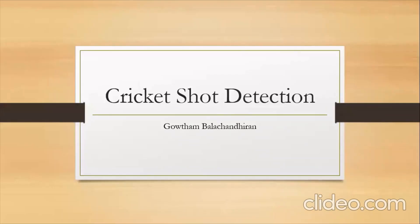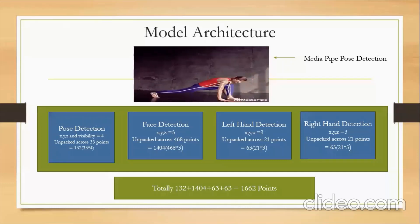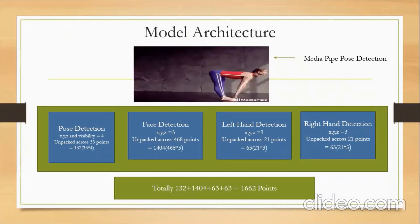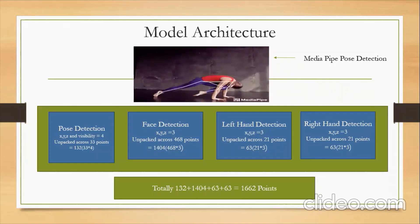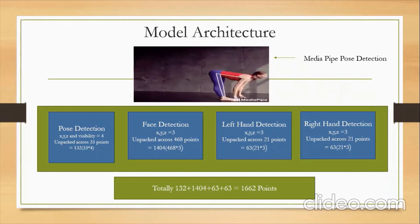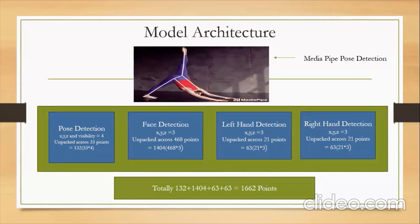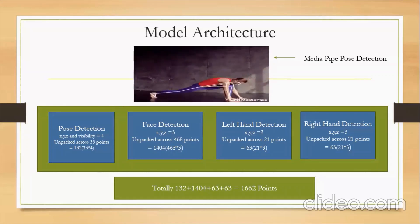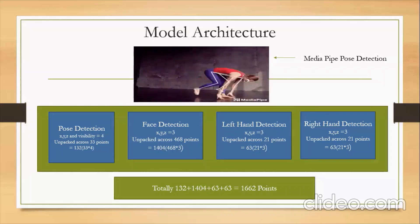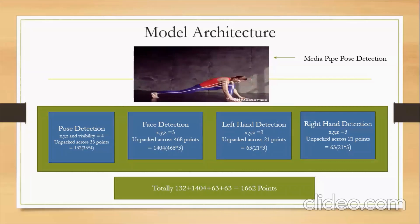I'll talk about the theoretical part of how we fit this. It is based on two models. To start with, we've used MediaPipe pose detection — a framework which offers customizable ML solutions. The framework has solutions for face detection, face mesh, iris, hand detection, pose detection, hair segmentation, object detection, box tracking, and so on. But here we use only face mesh, pose connections, and hand connections.